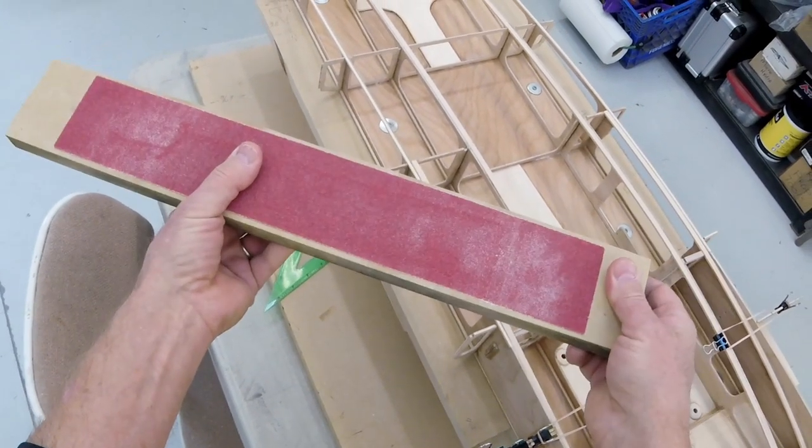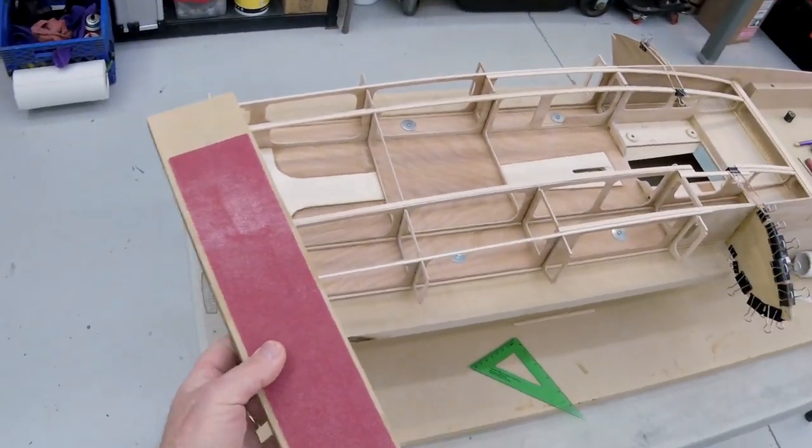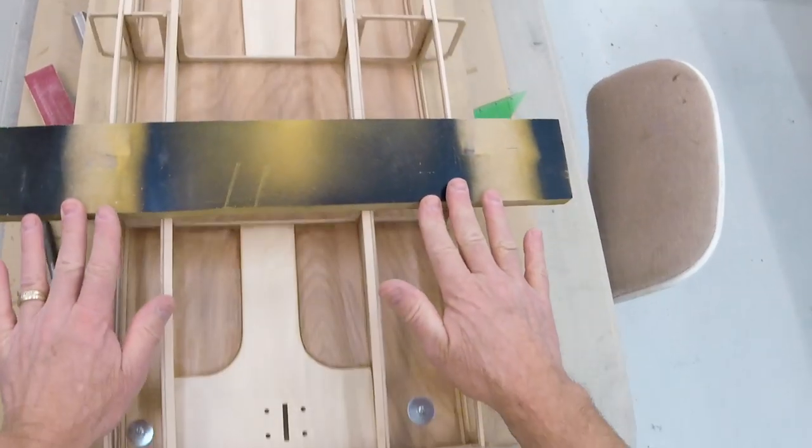I cut the board out of MDF because it's nice and straight, flat, awesome stuff. We've been doing one of the things we hate the most, which is sanding.